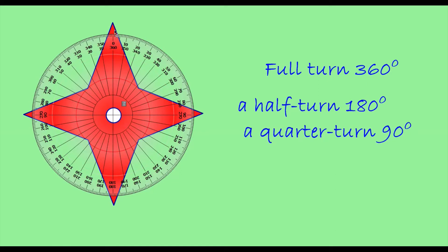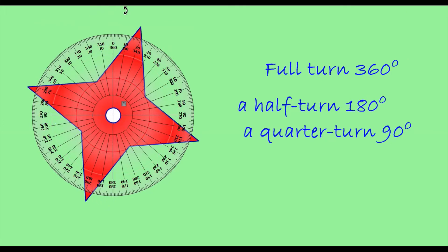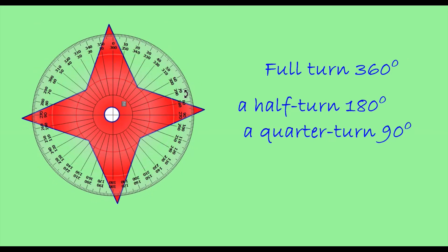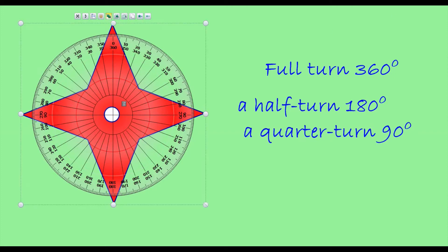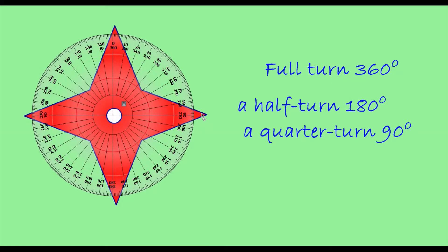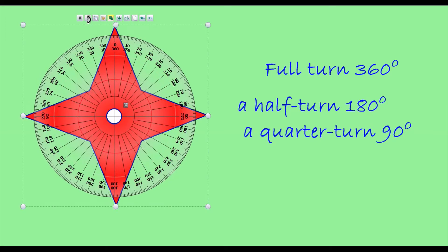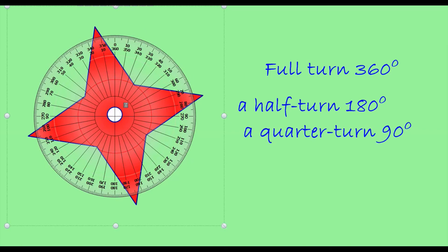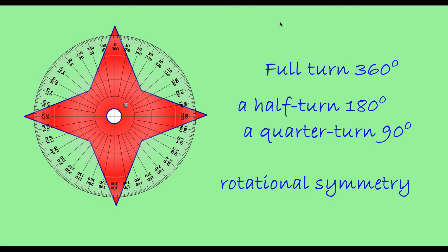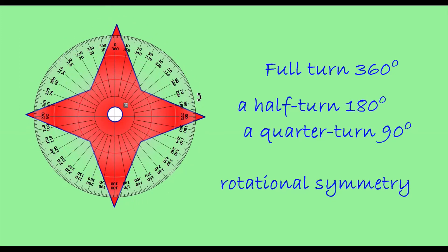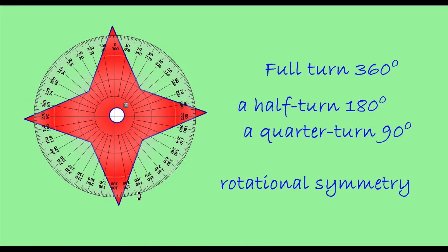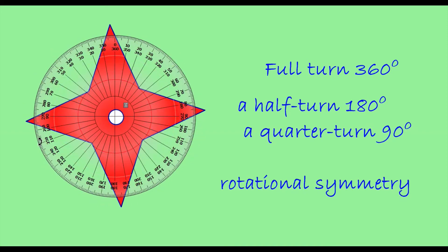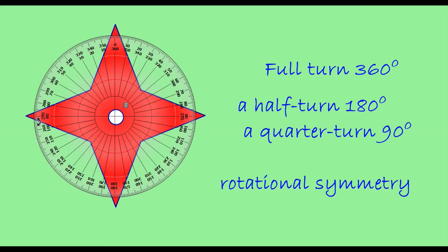If I rotate this object about a fixed point at 90 degrees, the object looks exactly the same. After rotating about a fixed point at a certain angle, if the object looks exactly the same, we can call this object having rotational symmetry. After rotating 90 degrees it looks the same, at 180 degrees it looks the same, and at 270 degrees it also looks exactly the same.